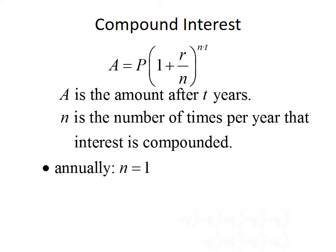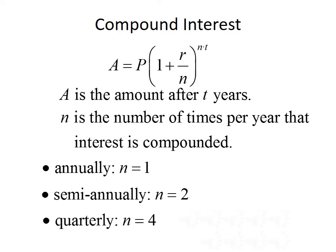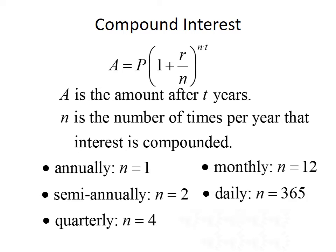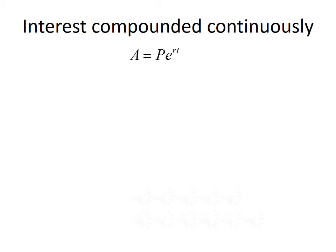If you see the word annually, then N is going to be equal to 1. Semiannually means N would be equal to 2. Quarterly would give us N is equal to 4. Monthly would give us N is equal to 12. And daily would give us N is equal to 365. Finally, we have the option of having interest compounded continuously, which uses a different formula: A equals P times E raised to the RT.